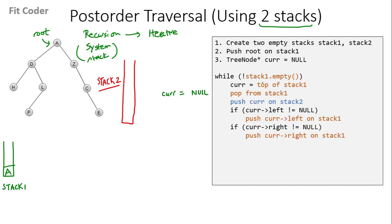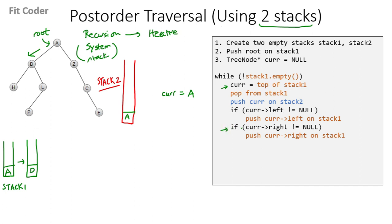Then we run a while loop while stack1 is not empty. Currently it is not empty, so we go inside the while loop. We set current to the top of stack1, which is A. Then we pop from stack1 and push current onto stack2. Then we check the left of A, which is D — if it is not null, we push it on stack1. Then we check the right of A, which is Z — if it is not null, we push it on stack1.